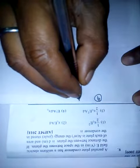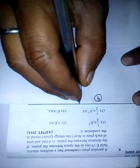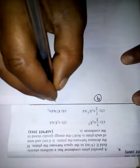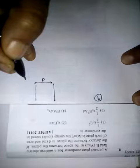Question number 9. A parallel plate capacitor condenser has a uniform electric field E in the space between the plates. If the distance between the plates is D, this is a parallel plate capacitor, distance between the plates is D.